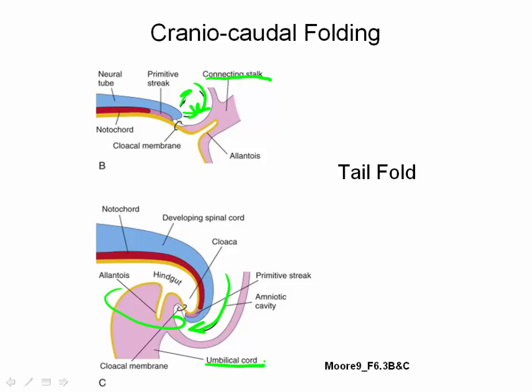Folding of the tail end also incorporates part of the yolk sac into the embryo as the hindgut. The hindgut will form the distal portion of the GI tract and the urinary bladder. Prior to folding, the yolk sac extends a small diverticulum called the allantois into the connecting stalk. The allantois will become the means by which the embryo eliminates waste and passes it to the placenta through the umbilical cord.